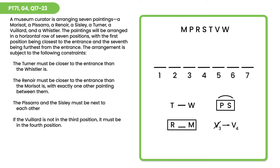Rather than taking 30 to 60 seconds looking for all the places where certain players can't go — for example, from the second rule, M cannot go first or second, and R cannot go sixth or seventh — or since V has to go third or fourth, ruling out V from first, second, fifth, sixth, and seventh — it's probably not in our interest to do that. This game is light on concrete inferences. There are implications to the rules, but nothing to necessarily put into the game board before we start the questions.